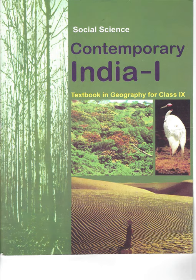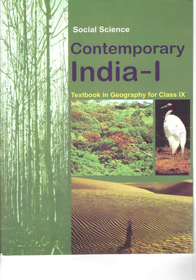The Himalayan mountains. The Himalayas, geologically young and structurally fold mountains, stretch over the northern borders of India. This mountain range runs in a west-east direction, from the Indus to the Brahmaputra. The Himalayas represent the loftiest and one of the most rugged mountain barriers of the world. They form an arc which covers a distance of about 2,400 km. Their width varies from 400 km in Kashmir to 150 km in Arunachal Pradesh.